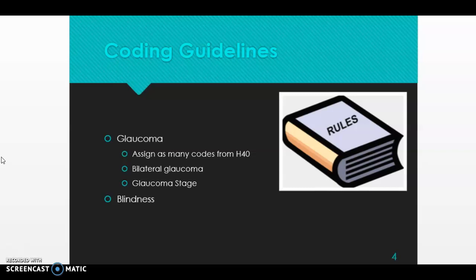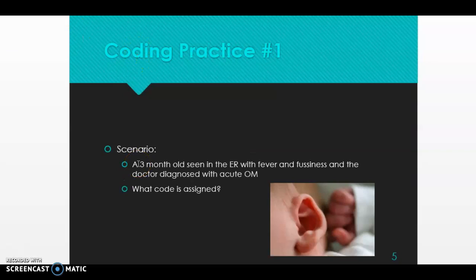The second guideline tells us that if we're coding bilateral glaucoma with the same type and the same stage in both eyes, there is a code for bilateral glaucoma. The seventh character of that code will be used to show the glaucoma stage. Just make sure when coding glaucoma that you watch your code descriptions as well as the coding guidelines.